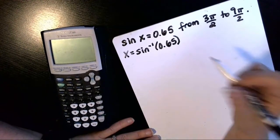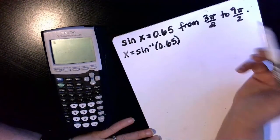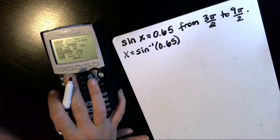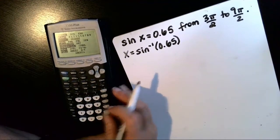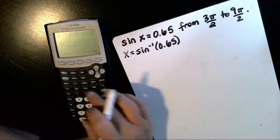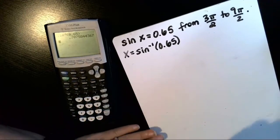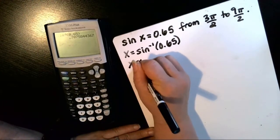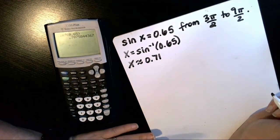And since we want to find all of the values of x from 3 pi over 2 to 9 pi over 2, that's radians. So we're going to need to make sure the mode in the calculator is in radians, which it's not. Okay, now it is. So the arc sine of 0.65 is approximately 0.71 if we round to two decimal places.